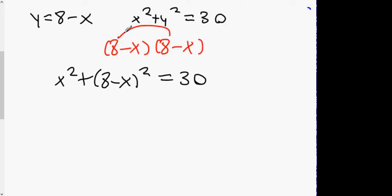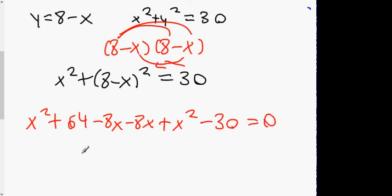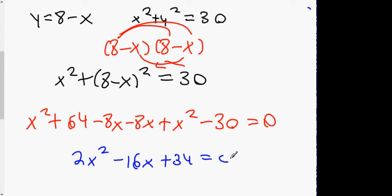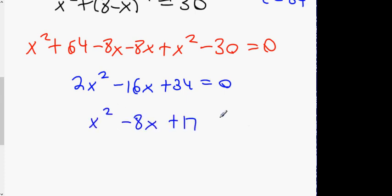Please don't make the obvious mistake — write it out twice and multiply it out properly. Expanding: x squared plus x squared minus 8x minus 8x plus 64 minus 30 equals zero. That gives 2x squared minus 16x plus 34 equals zero. All the numbers are even, so we can divide everything by 2, giving x squared minus 8x plus 17 equals zero. Don't attempt to factorise — use the minus-b formula. So a equals 1, b equals minus 8, therefore minus b equals plus 8, and c equals 17.